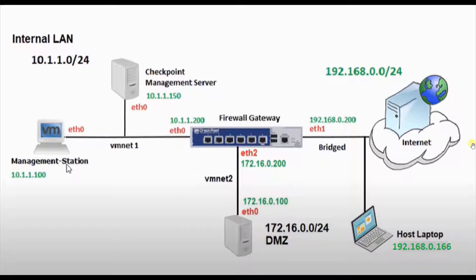Let me give you a brief overview of our network design and then we will proceed with the configuration. As per our network design we will have one checkpoint management server and one checkpoint gateway. The checkpoint gateway will have three network ports. Ethernet 0 will be on the internal LAN side and will be connected to VM network adapter 1, using the 10.1.1.0/24 network.